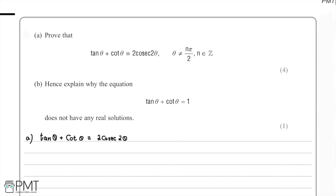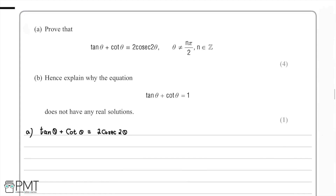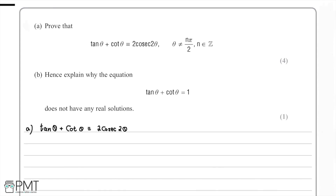In this question we have been asked to prove that tan theta plus cot theta is equivalent to 2 cosec 2 theta. We're going to work through this together and look at all the different stages and trig formulae we need to be able to prove this. We need to think about what terms we have, what we know about them, and how we can rewrite them.